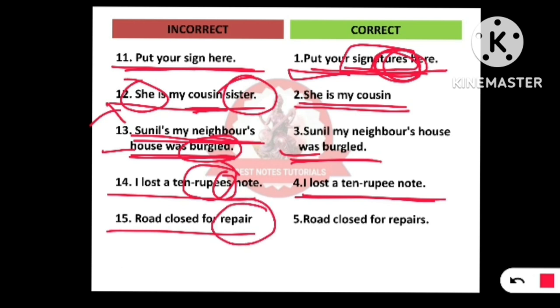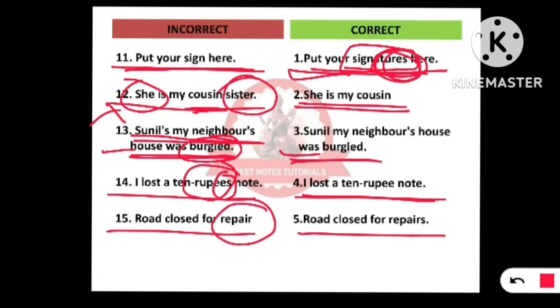Number fifteen: 'Road closed for repair.' Here we should use 'repairs' with an 's.' The correct sign reads: 'Road closed for repairs.' It should be used with 's' — 'repairs.'